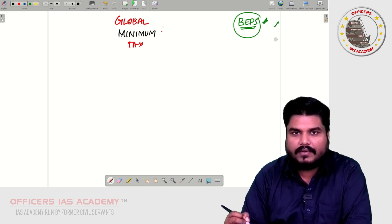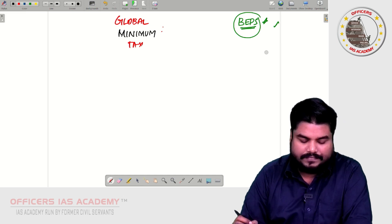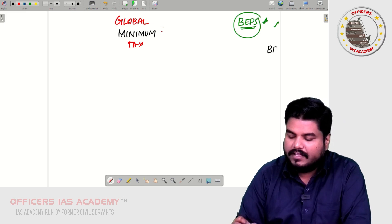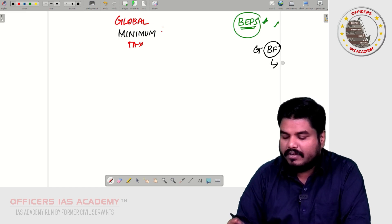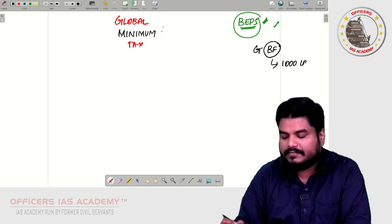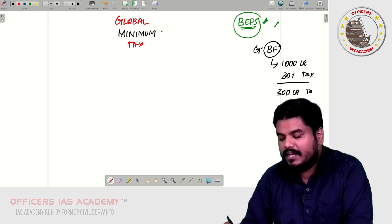So in the BEPS example, what did I say? So Biryani Factory, that is Guna's Biryani Factory in India, is making a profit of thousand crores, for which 30 percent tax has to be paid - that is 300 crore rupees of tax.